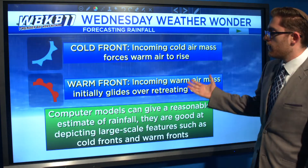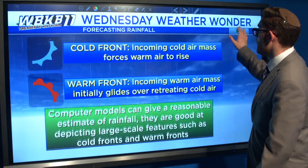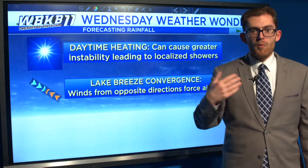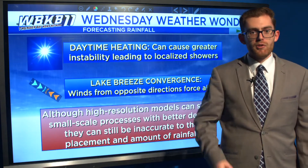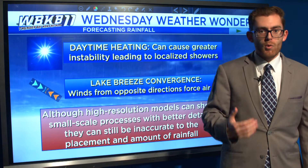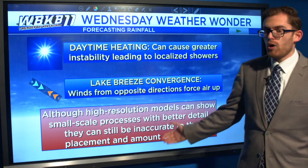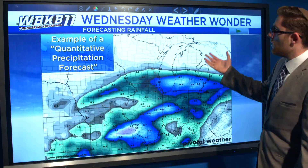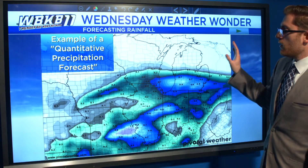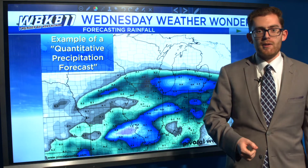Computer models generally give a fairly good estimate of how much rainfall we can see, and they're good with large systems. When it comes to daytime heating, which can create localized showers, or lake breeze convergence where opposite winds meet and force air to rise up, even high-resolution models have problems with the placement and the amount of rain. This is an example of what a rainfall estimate from a computer model looks like — it gives us colors representing different rainfall amounts over a map of the area.